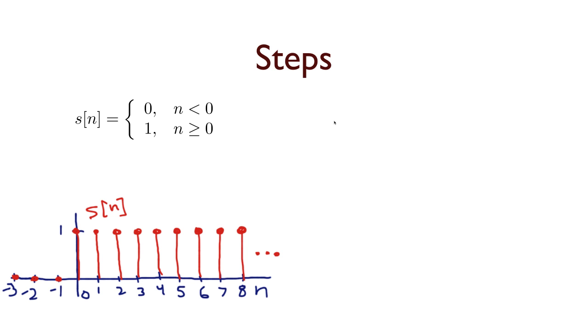So, let's talk next about steps. And here I've given the equation for a step. Let's call it S(n). And it says that before time zero, before n equals zero, the value of this signal is zero. And then, for n greater than or equal to zero, the value is one. So, there's a sudden change that occurs at n equals zero. And I've graphed that signal down here in the bottom left. You can see it's zero, and then at time zero, it jumps up to one.